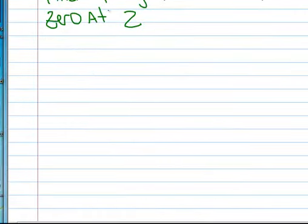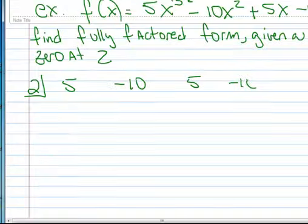Here's an example given this polynomial. It's a third degree polynomial, and we want to find the fully factored form given a real zero at 2. So when we have a zero at 2, we know we can use synthetic division to help us factor or reduce this polynomial.